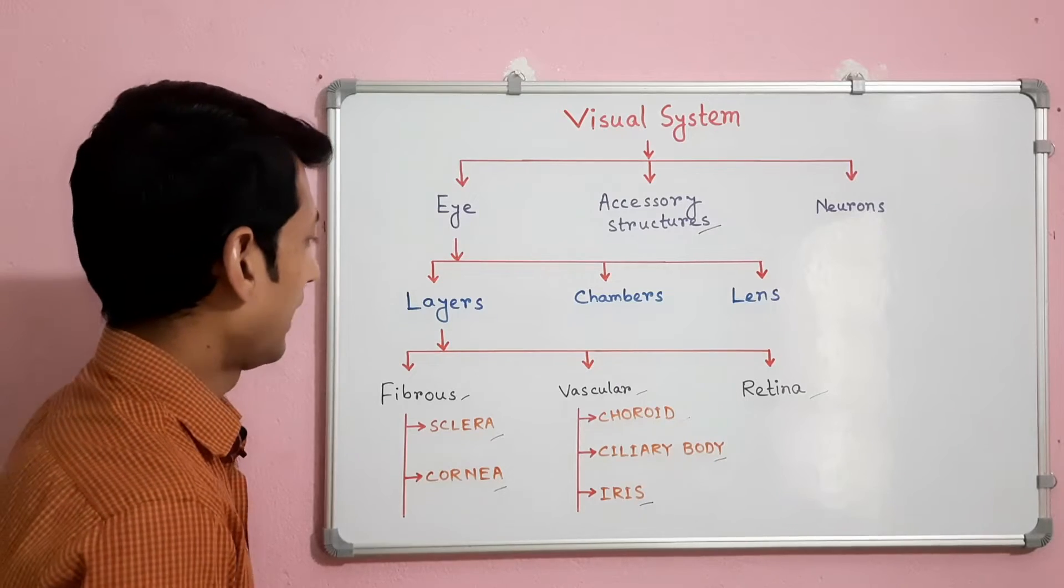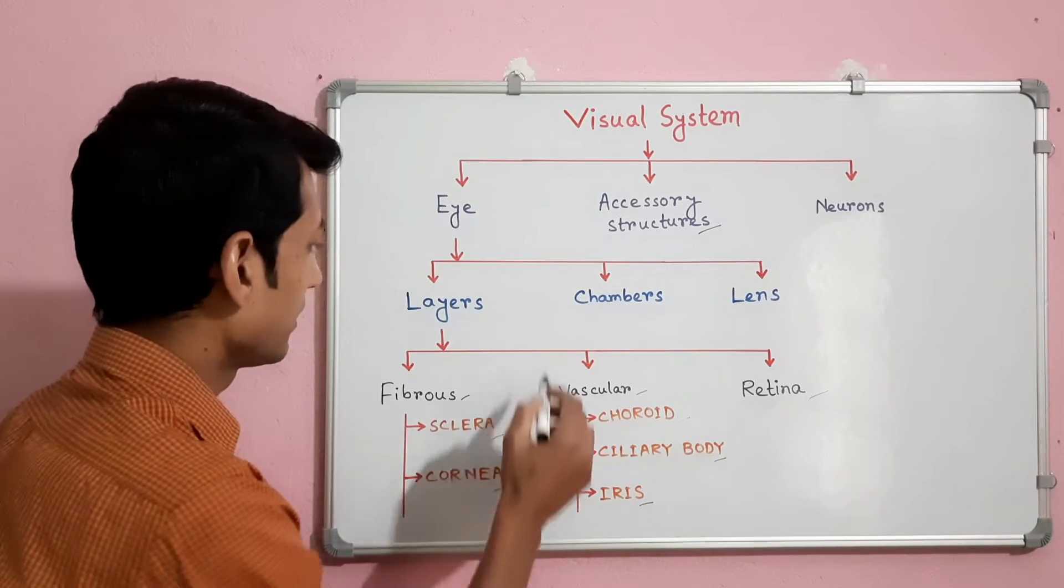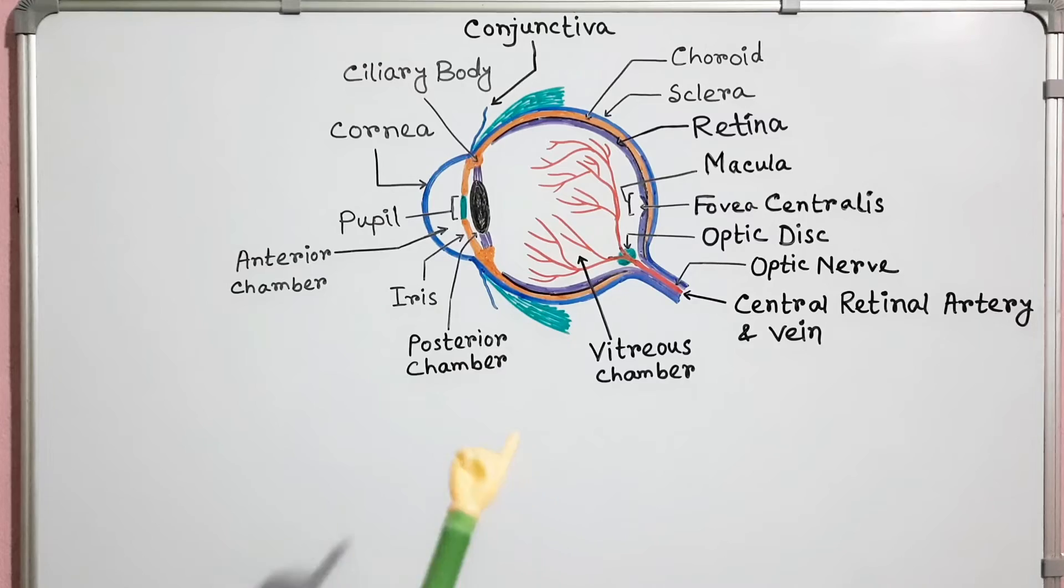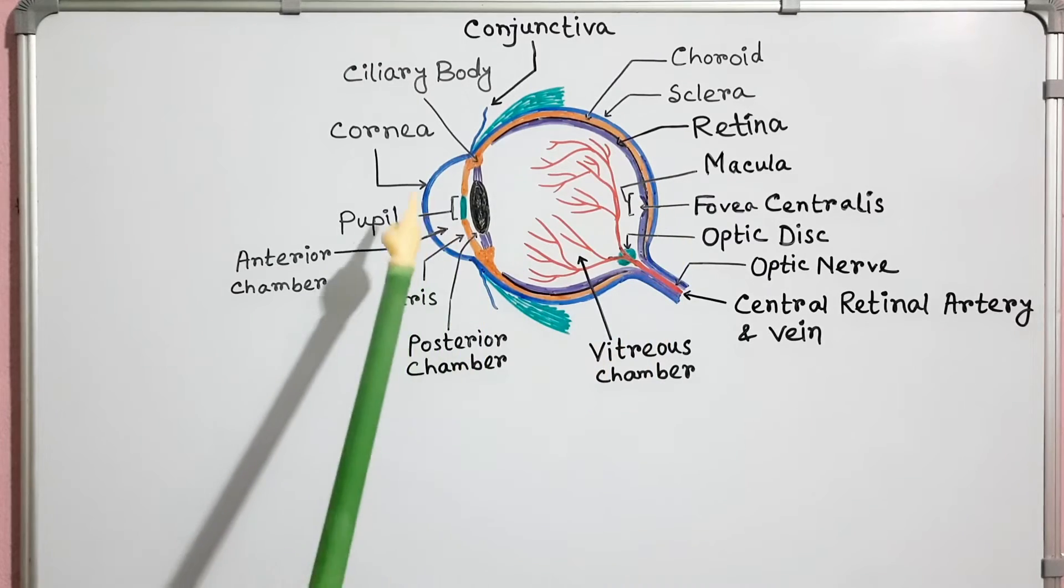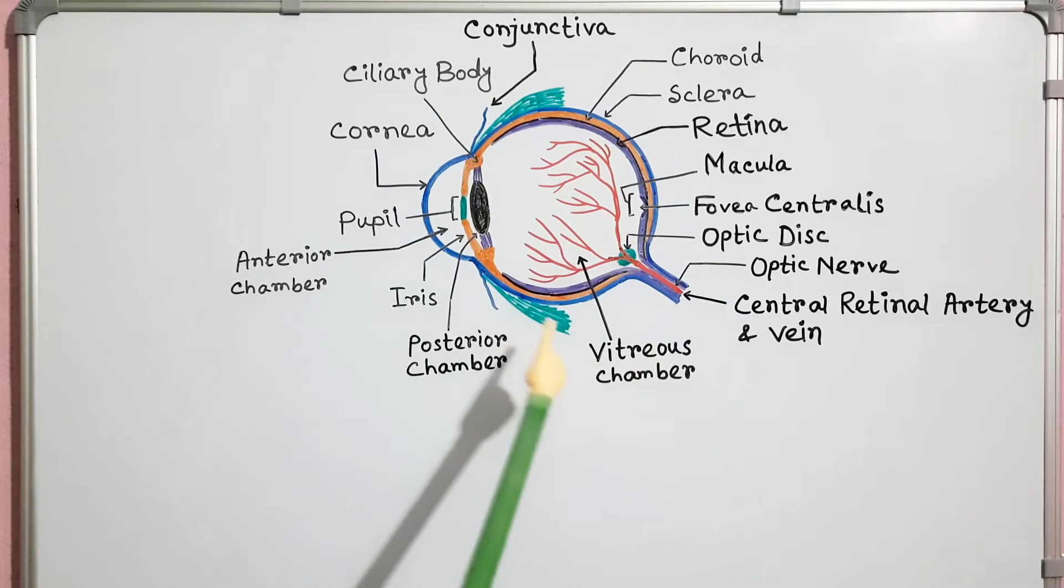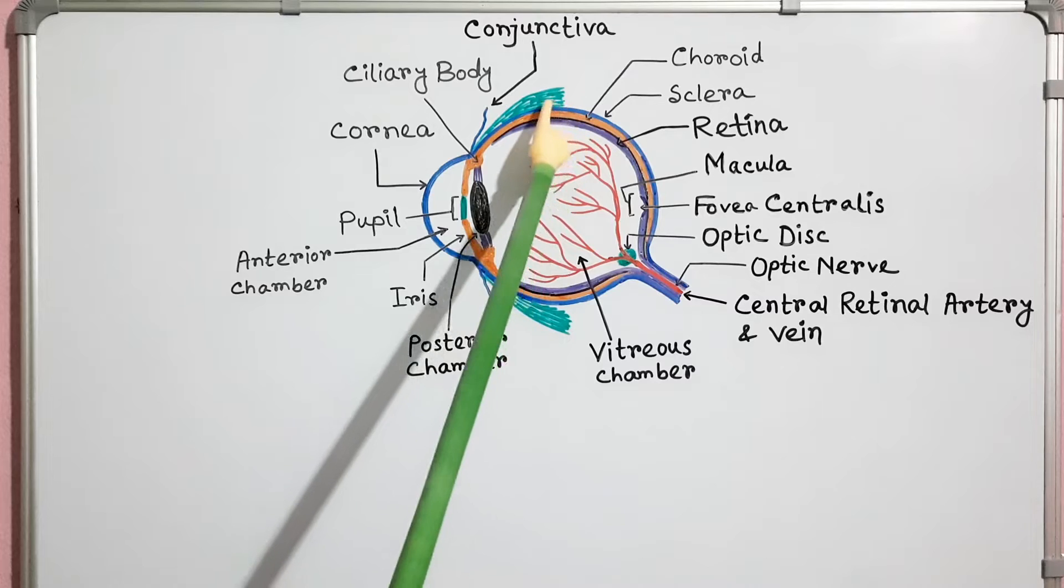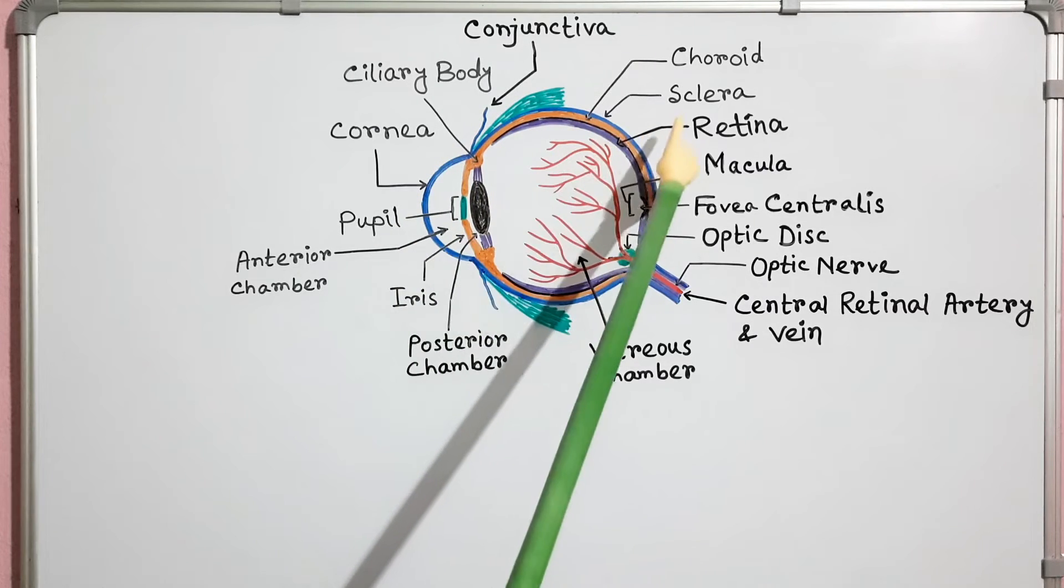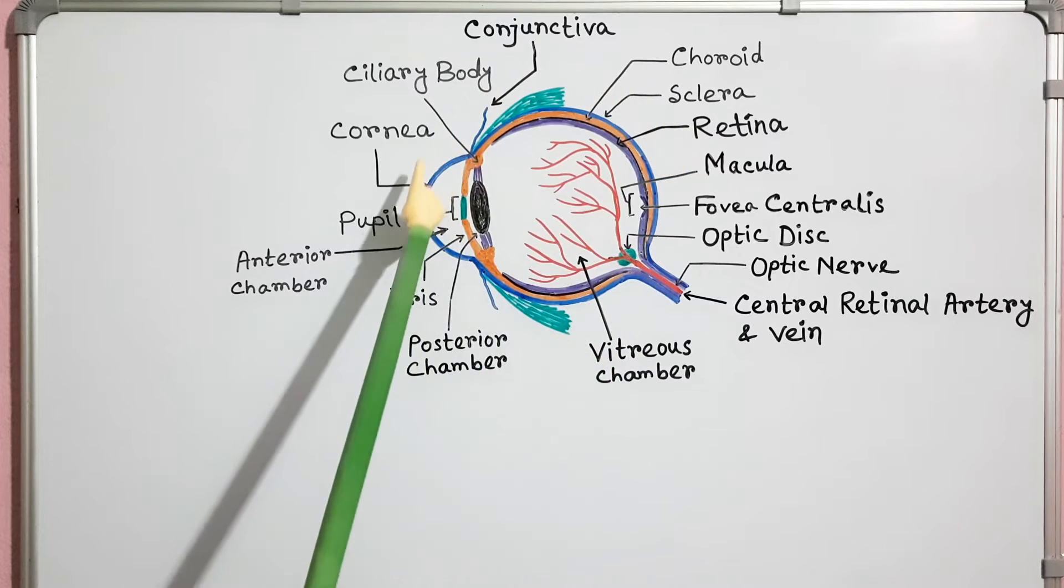So now I will try to explain all these layers. Here I have drawn a schematic diagram to show different layers of the eye. This is the fibrous layer. It consists of sclera and cornea.